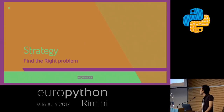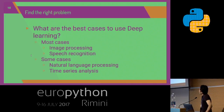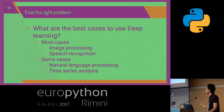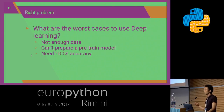The first part is strategy: find the right problem. What is the best case to use deep learning? In most cases, image processing and speech recognition are higher performance than other methods. In some cases it is possible to apply natural language processing and time series analysis. What is the worst case? Not enough data, cannot prepare a pre-trained model, or needing 100% accuracy — because in general, machine learning cannot achieve 100% accuracy.